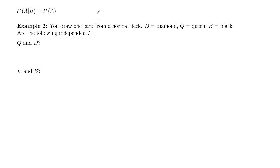Let's look at another example with a deck of cards here. So you draw one card from a normal 52-card deck. D is the event that you draw a diamond. Q is the event you draw a queen. And B is the event that you draw a black card. Are the following independent?